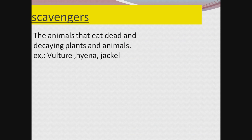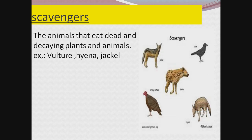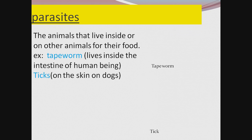The next category is scavenger. The animals that eat dead and decaying plants and animals are called as scavengers. These animals are very important in our surrounding because they keep the surrounding clean. For example, vulture, hyena, jackal, and crow. Some examples are given in the diagram.